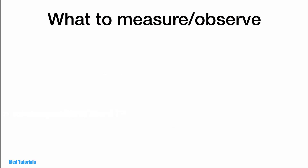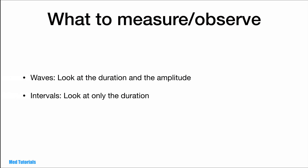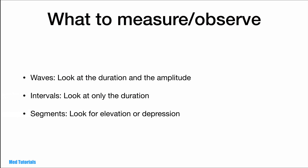In an ECG, what do we measure and observe in its components? There are some principles that we follow. In the waves, we look at the duration, shape, and amplitude. For intervals, we look at only the duration. While for segments, we look for elevation and depression — the most important being ST segment elevation or depression.